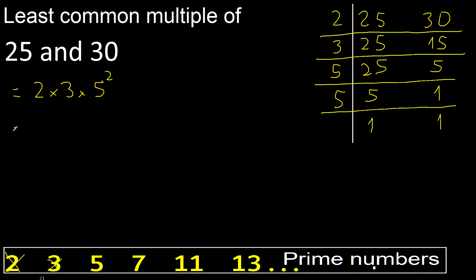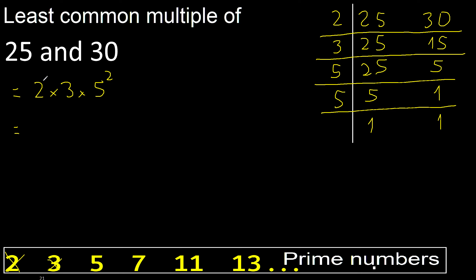Exponent is 1. 5 multiplied 2 times: 5 multiplied by 5 is 25. 25 multiplied by 3 is 75. 75 multiplied by 2.